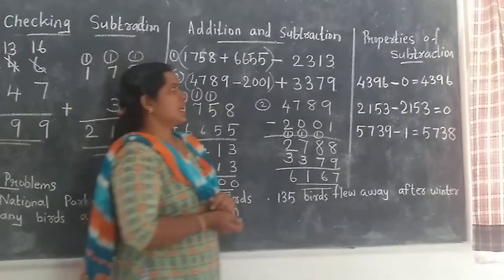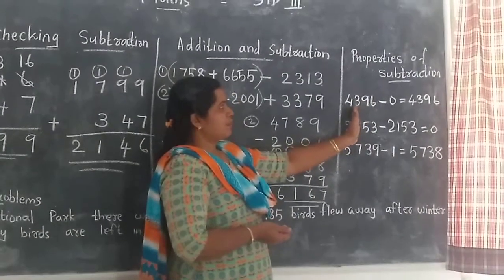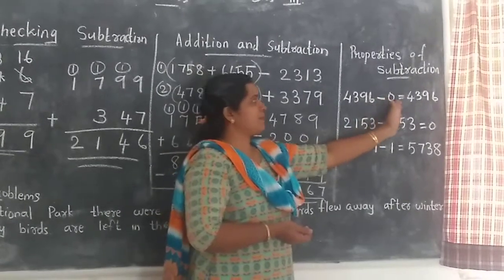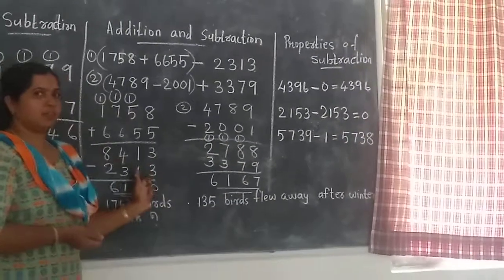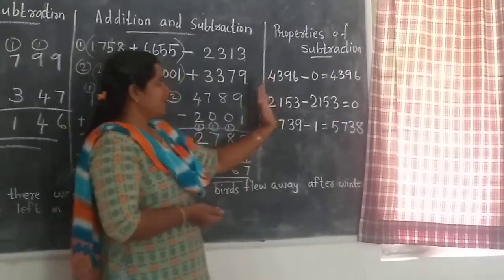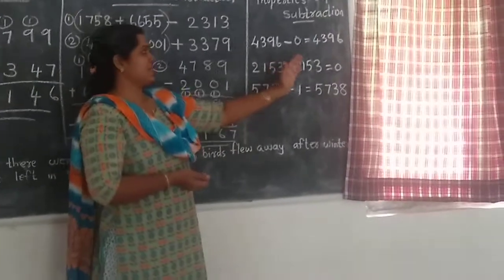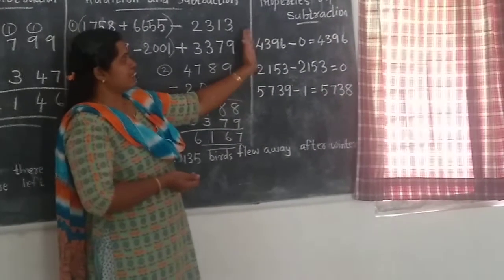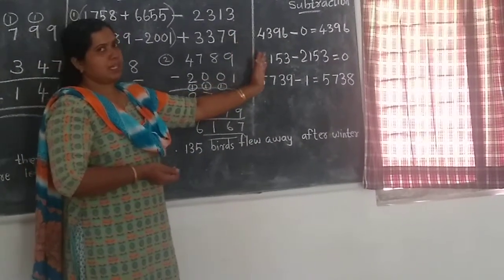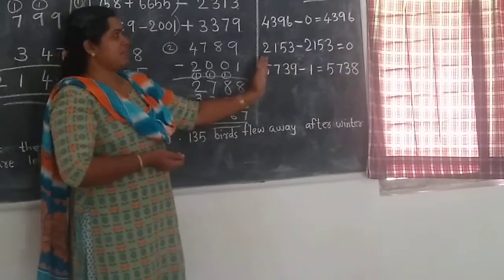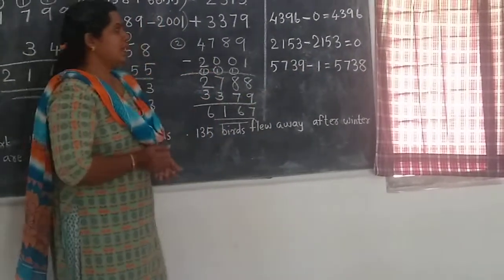Next is the properties of subtraction. The first property: when we subtract 0 from a number, we get the same number. The second property: when we subtract a number from itself, we get 0. The third property: when we subtract 1 from a number, we get its predecessor — that is, the number that comes just before it.